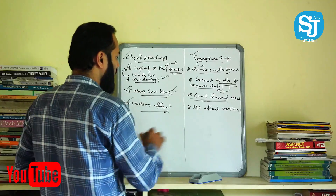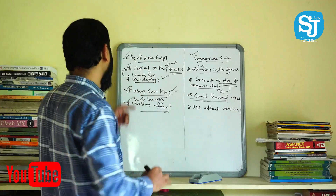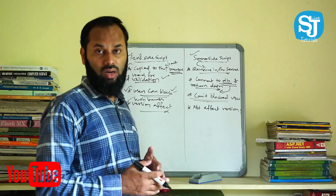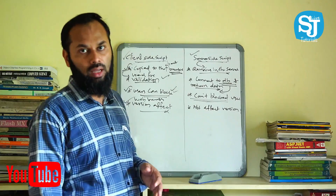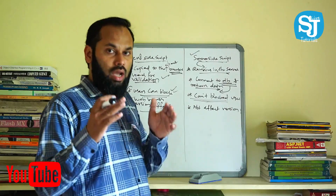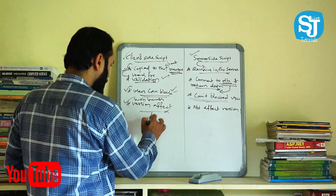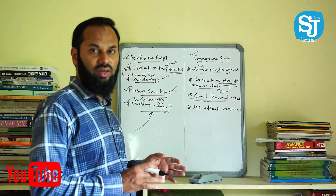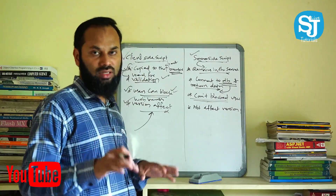The fourth difference is the version effect — that is the web browser version. If you have any version, it is effective. Client-side scripting is affected. For example, there is a version of Windows Explorer. If you are using Mozilla Firefox, it cannot be blocked by the user scripting. If you are using the scripting, you can install the updated version of the web browser. If you have any new version, it is effective. If you are using the new version, you cannot do that validation in the client-side scripting.